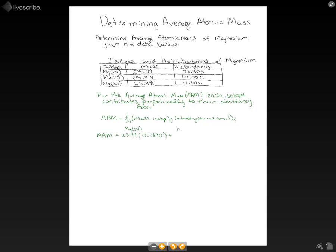For Mg-25, that's 24.99 times its abundancy of 0.10000. And for Mg-26, that's 25.98 times 0.1110.